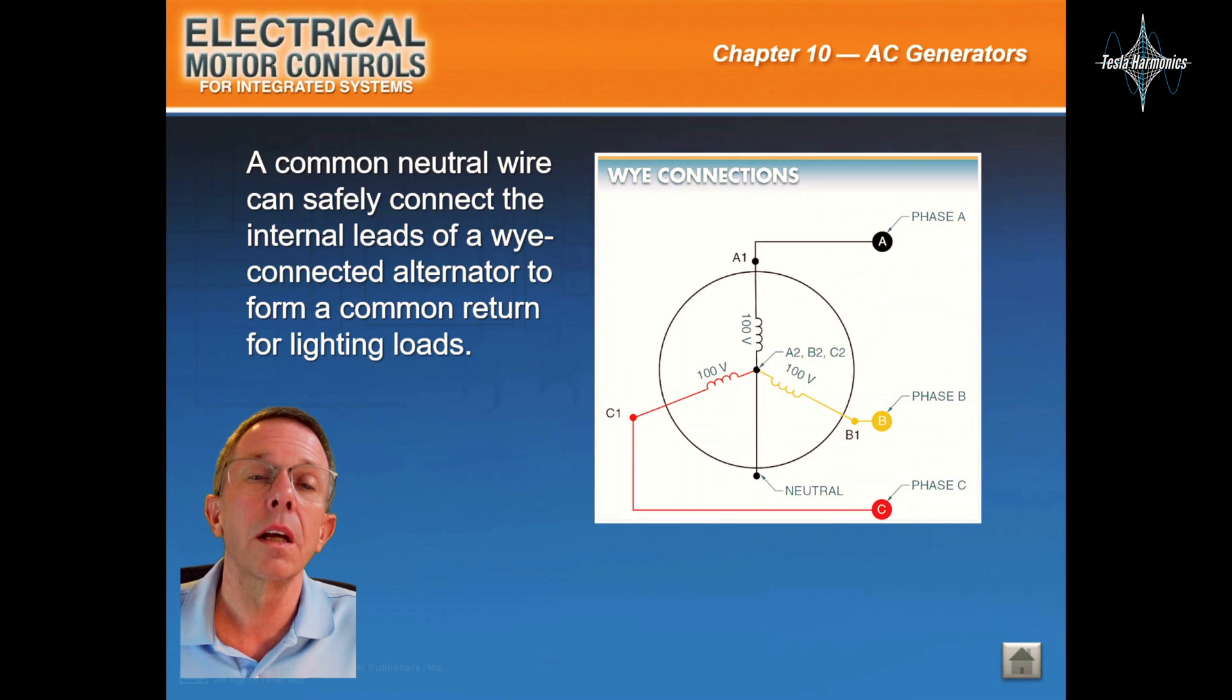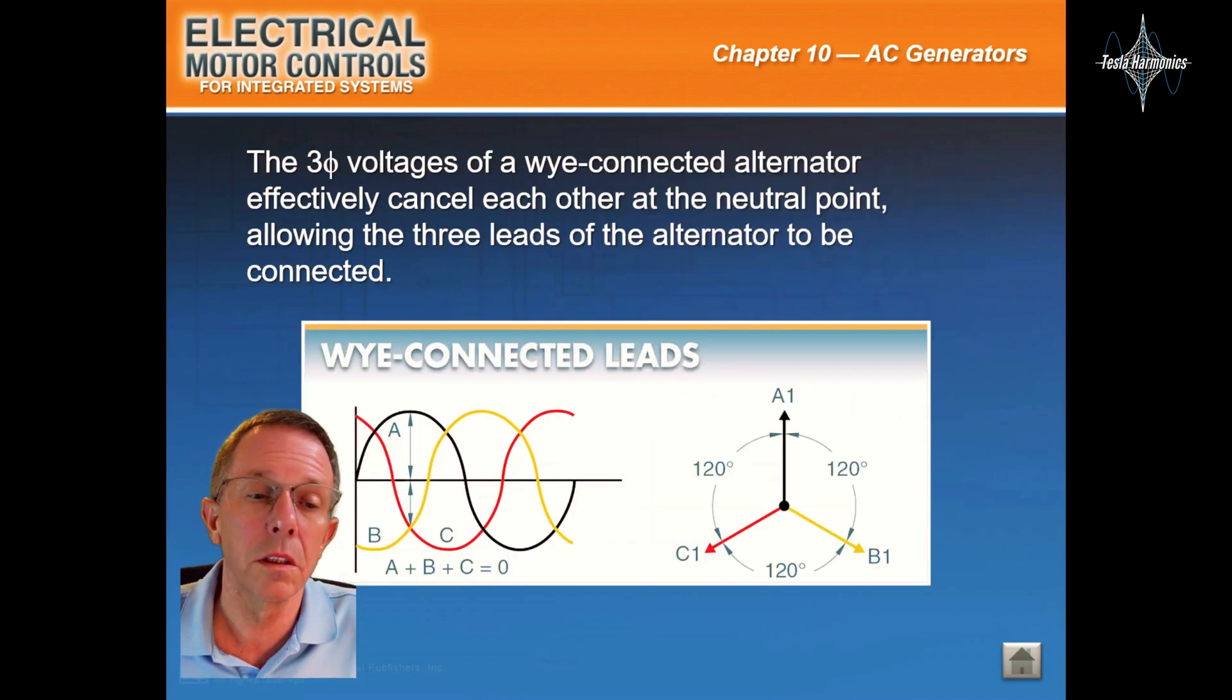A common neutral wire can safely connect the internal leads of a Y-connected alternator to form a common return for lighting loads. The three-phase voltages of a Y-connected alternator effectively cancel each other out at the neutral point, allowing the three leads of the alternator to be connected.